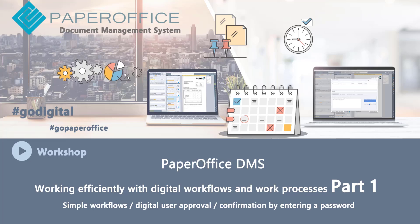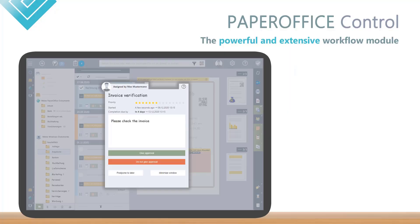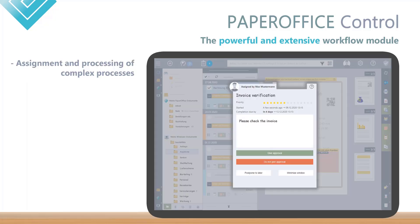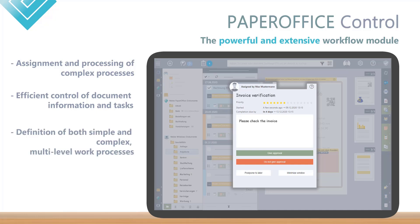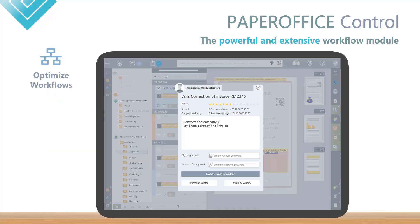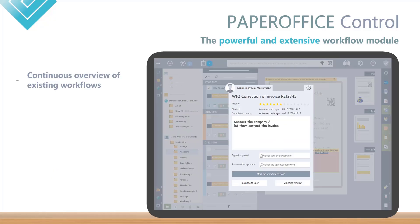Hello and welcome to our new workshop. In this workshop we would like to show you how you can implement workflows in your company professionally and successfully, thanks to PaperOffice. The powerful and extensive workflow module PaperOffice Control enables the assignment and processing of complex processes, controls document information and tasks efficiently through the company. Both simple and complex multi-level workflows with branches can be defined. With PaperOffice Workflow you optimize your work processes, reduce costs and become more productive overall. So every employee always has an overview of existing workflows and thus control over all processes.